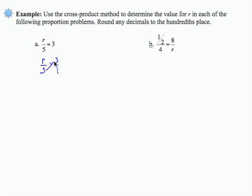I'm just going to take this first cross product here. So I'm going to say R equals 3 times 5 over 1, and that is just 15 over 1, or 15. Let's perform a check and make sure that our result is correct.